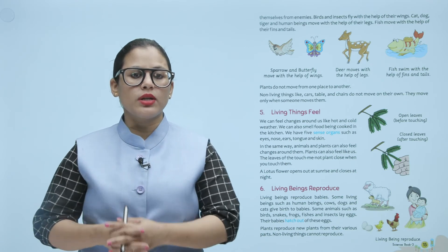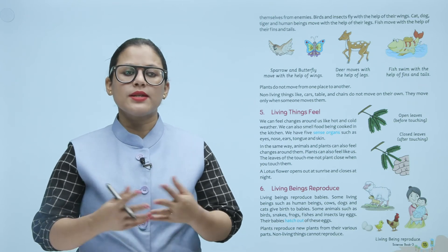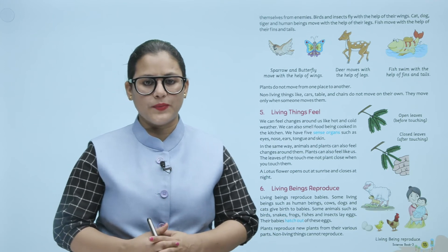Ab living beings hain, woh reproduce karte hain apne babies ko. Kuch aise animals hain jo apne bachon ko janam dete hain. Jabki kuch aise animals hain jo ande dete hain, aur us mein se unke babies hatch out hote hain. Plants bhi naye plants reproduce karte hain, various parts se. But non-living things reproduce nahin kar sakte.